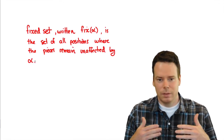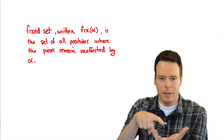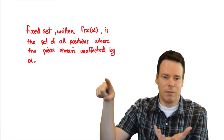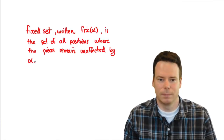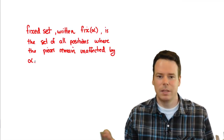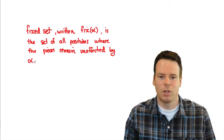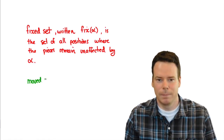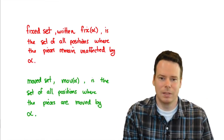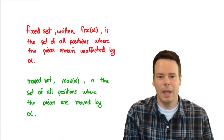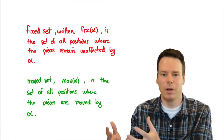This is as opposed to a piece in a position where the piece moves out of the position and never comes back after the move sequence alpha — in that case we call that position a moved position. The set of all positions which are moved under the move sequence alpha is called the moved set of alpha. So we've got the fixed positions where pieces end up in the same position they began, and the moved set which is the positions where pieces have moved out.